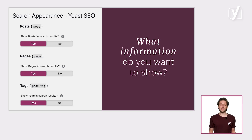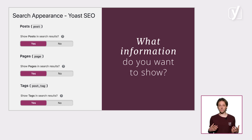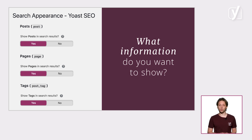Let's start with the basic settings. In the search appearance settings, you can determine your default settings for every type of content available in WordPress. For every type of content, we ask you whether you want search engines to put it into the search results. If you pick no, we add a noindex robots meta tag, making sure that nothing will show up on the results page. You can do this for posts, pages, tags, and lots of other kinds of content.